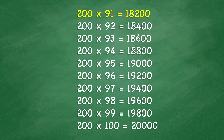200 times 91 equals 18,200. 200 times 92 equals 18,400. 200 times 93 equals 18,600. 200 times 94 equals 18,800. 200 times 95 equals 19,000. 200 times 96 equals 19,200. 200 times 97 equals 19,400. 200 times 98 equals 19,600. 200 times 99 equals 19,800.